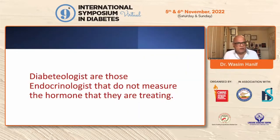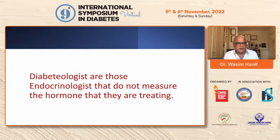This is a quote first mentioned by one of my endocrine colleagues who does a lot of pituitary work: 'Diabetologists are those endocrinologists who do not measure the hormone they are treating.' For most endocrinologists this would be sacrilegious — imagine treating hypothyroidism or hyperthyroidism without measuring thyroid hormone, or Cushing's without measuring steroids. But as I said, most diabetologists are using a surrogate marker — be it HbA1c or glucose — not only to diagnose patients but also to direct treatments for them.